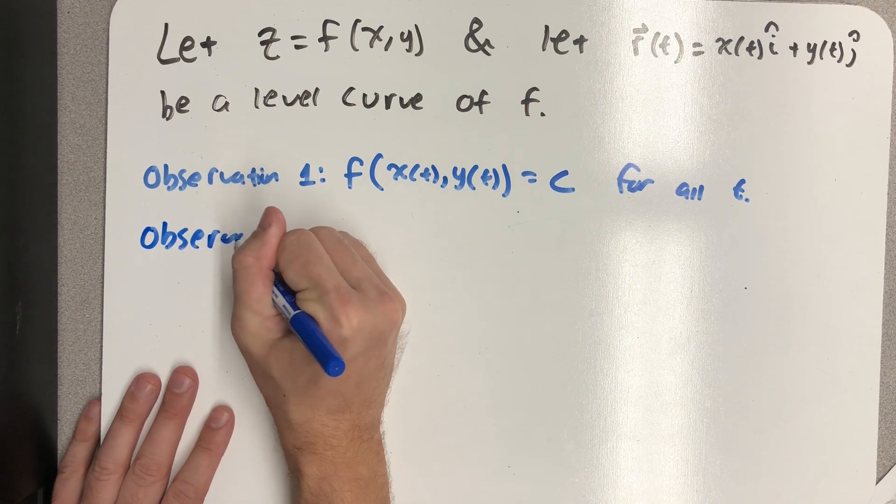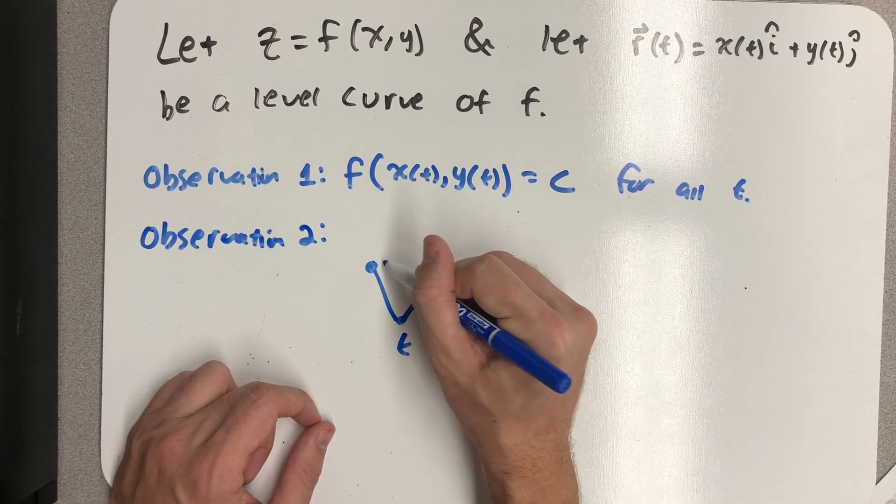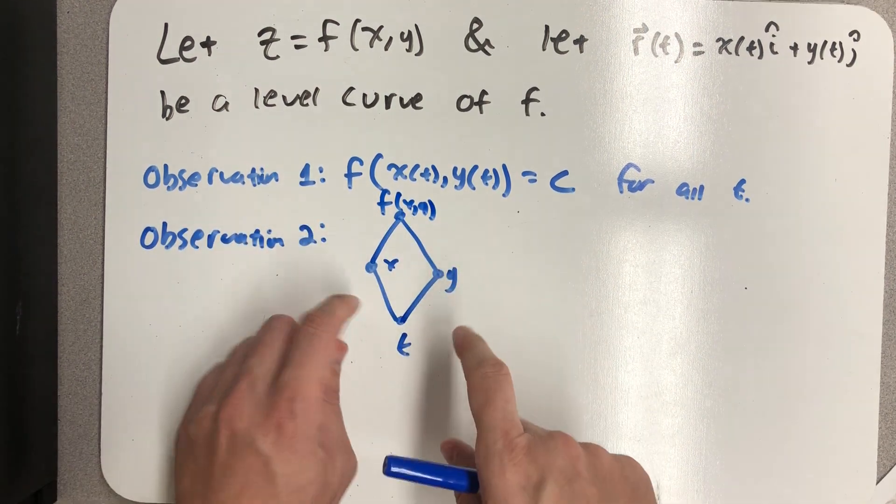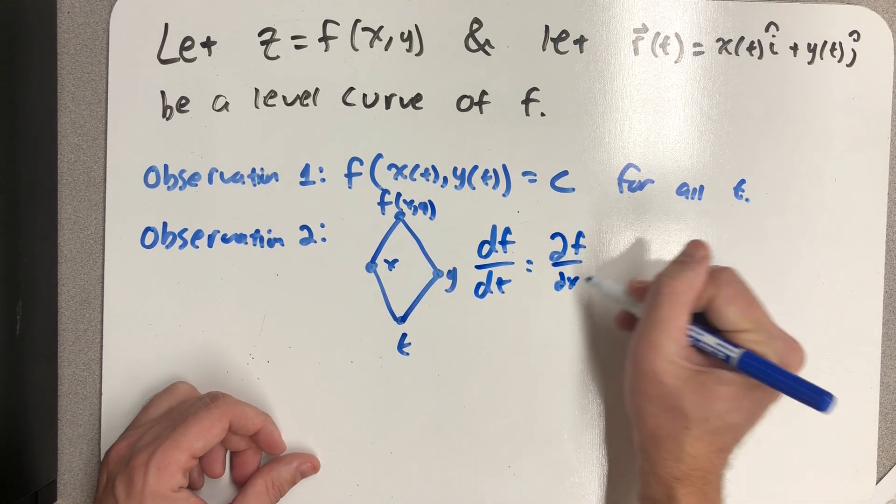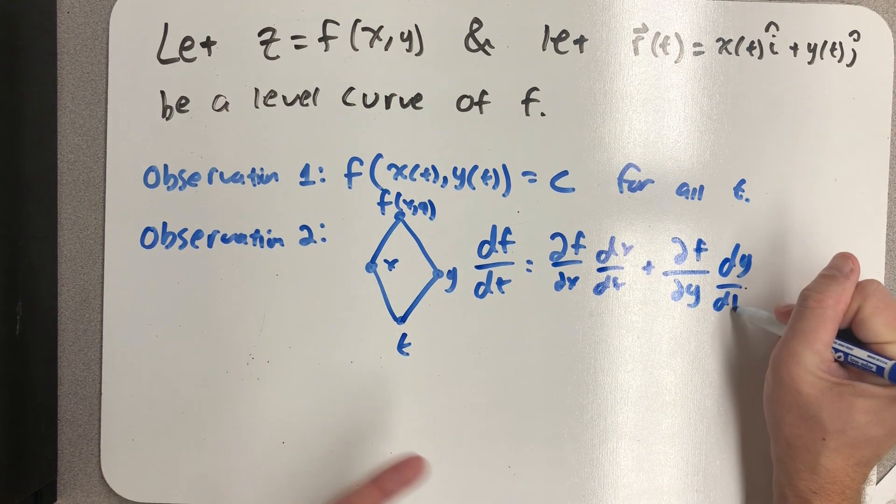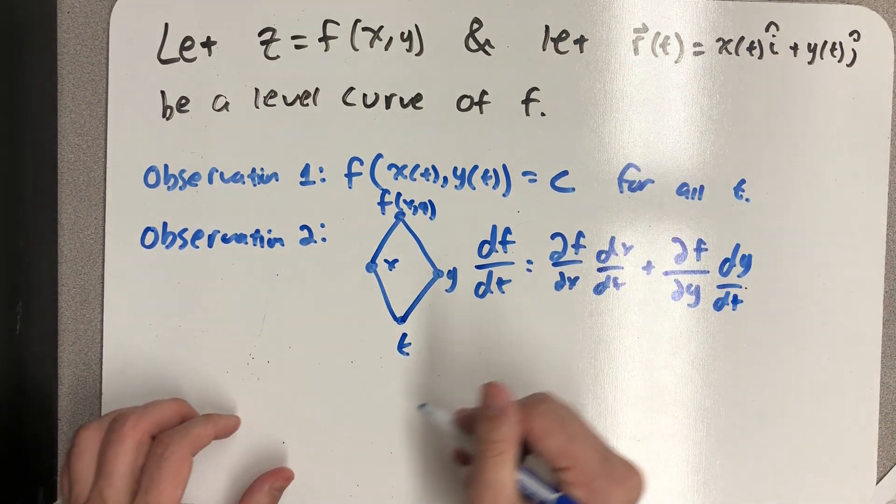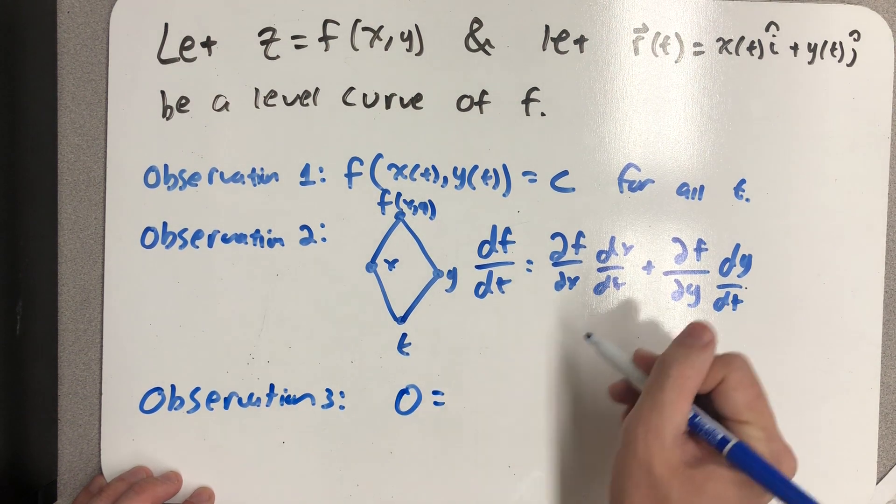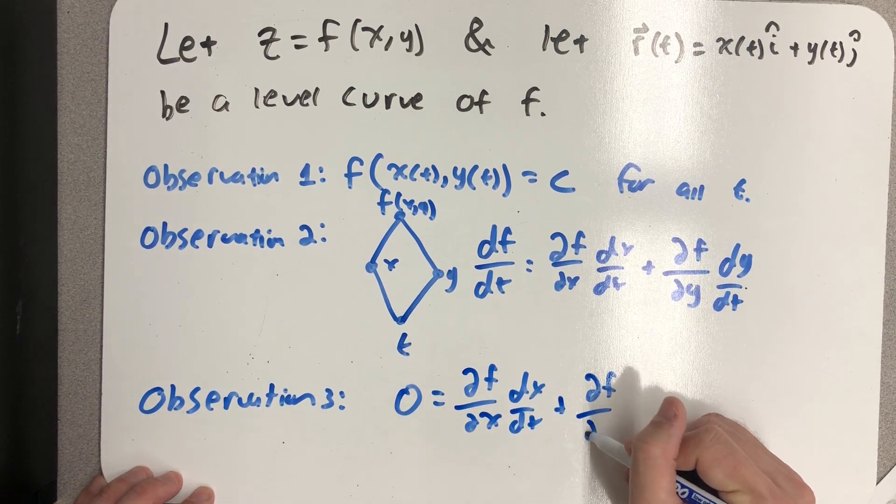My second observation is that I can draw a very simple chain rule for this - a dependency diagram that we're used to at this point. I can label these with partials and derivatives, and we end up with this derivative statement. More importantly, because of the first observation, the derivative of f with respect to t has to be zero. Combining the first two observations, the chain rule expression - the product of these partials added together - is zero.